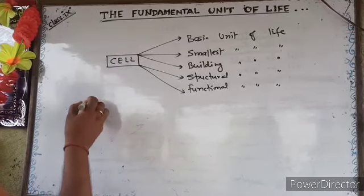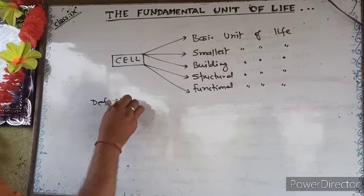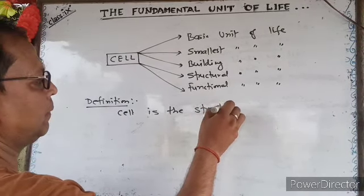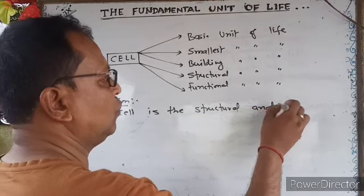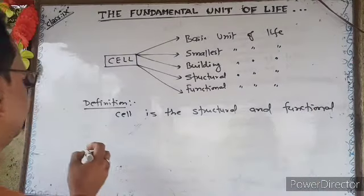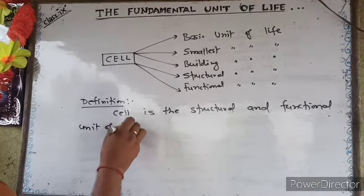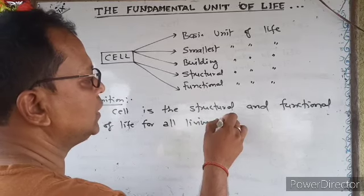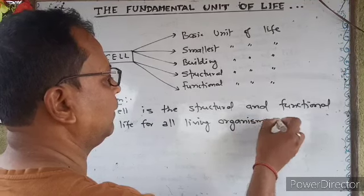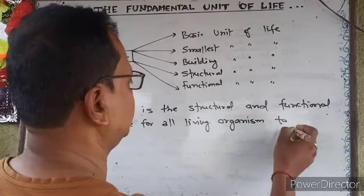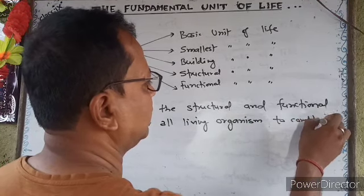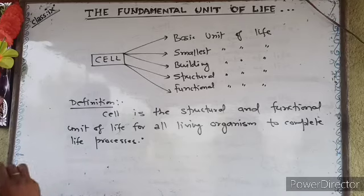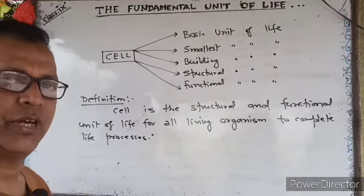What is the definition of the cell? Cell is the structural and functional unit of life. The cell has the ability for all living organisms to complete life processes such as digestion, respiration, excretion, etc.